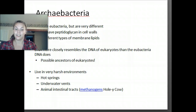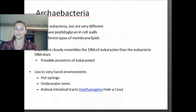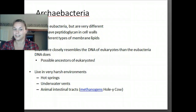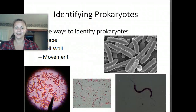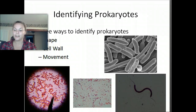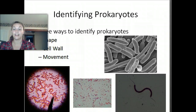So, archaebacteria — that's the second type of bacteria; remember the first was eubacteria. Archaebacteria are the weird ones that live in strange environments like the inside of a cow's stomach. All right, what we're going to focus on now is how we can classify bacteria.